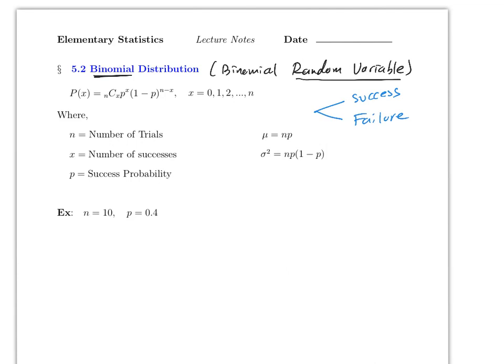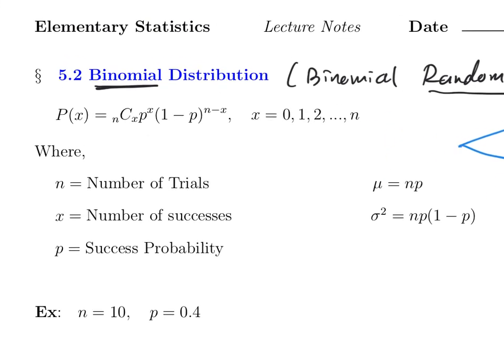For example, if you roll a die you have six choices — one through six — but if you focus on number four, getting a four is a success and everything else is a failure. In this particular distribution there is a formula, and all you have to do is plug values into it. The formula is actually pretty easy to use.